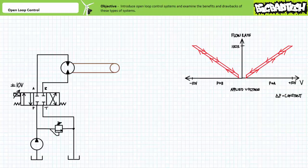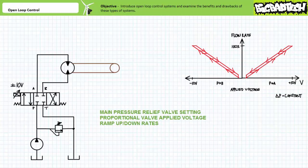At installation and commissioning, a technician is responsible for establishing several base settings: one, the main pressure relief valve setting; two, the voltage magnitude that positions the spool such that the steady state flow rate results in the conveyor moving at an appropriate speed; and three, the ramp-up and ramp-down rates such that the conveyor belt doesn't jerk to a start and slam to a halt. For open-loop control purposes, the technician is making use of a non-contact laser tachometer to read the resultant speed of the hydraulic motor. These respective values are initially set at 700 psi, positive 10 volts, and four seconds for both ramp-up and ramp-down time.